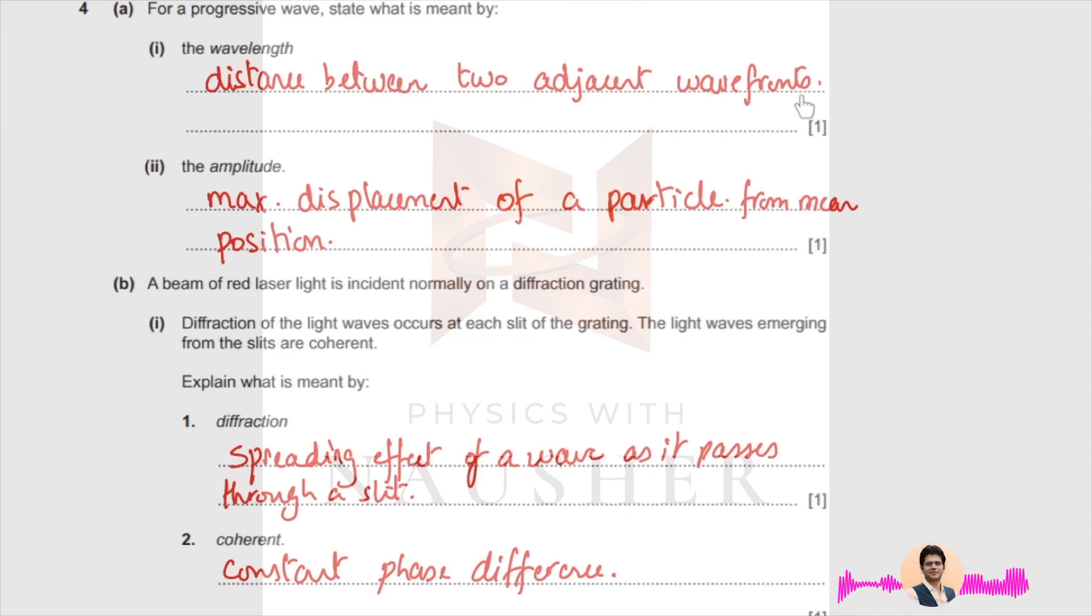What is meant by wavelength? The distance between two adjacent wave fronts. What is meant by amplitude? Maximum displacement of a particle from the mean position.